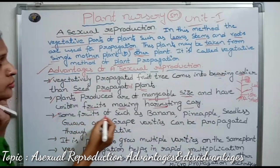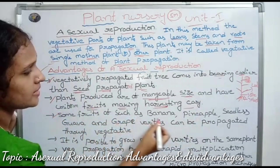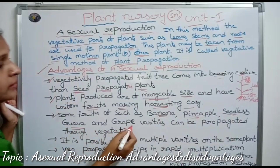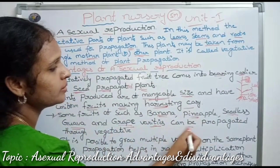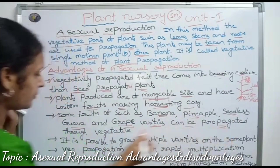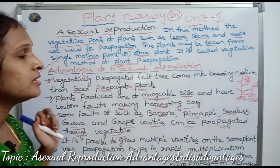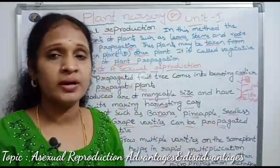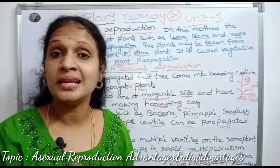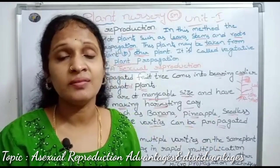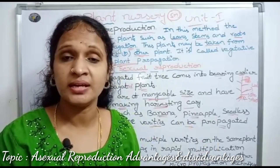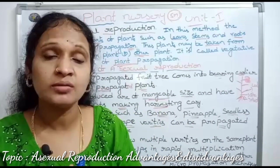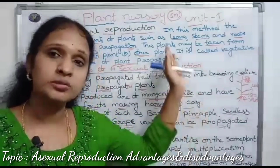Third advantage: some fruits such as banana, pineapple, seedless guava, and seedless grape varieties can only be produced through vegetative propagation. These varieties — banana, grapes, seedless guava — can be propagated this way.